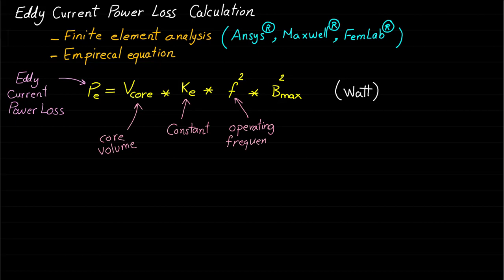Where P_E is the eddy current loss, V_core is the volume of the core, K_E is a constant determined by the nature of the magnetic material, f is the operating frequency, and B_max is the maximum magnetic field density.